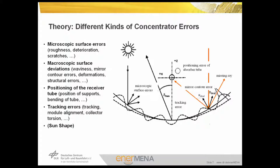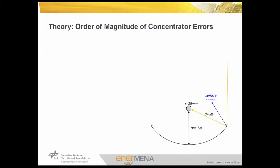Since the sun is not a point source but has a certain angular extent, its shape must also be taken into account when estimating the influence of concentrator errors. To estimate the allowed order of magnitude of concentrator errors, we consider a parabolic trough with typical dimensions: an aperture width of 6 meters, a focal length of 1.7 meters, and a radius of the absorber tube of 35 millimeters. The maximum distance from the surface of the mirror to the focal line is in the range of 3 meters.